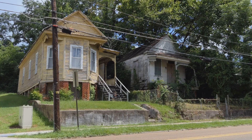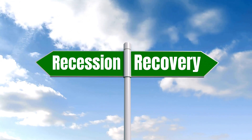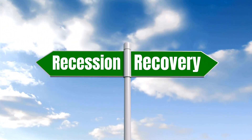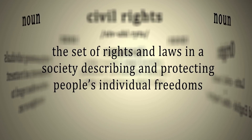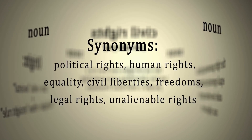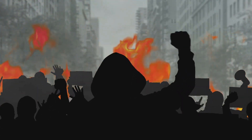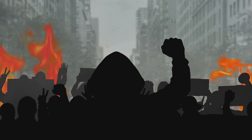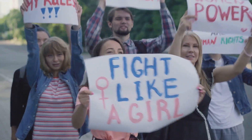Yet even as the nation stood tall on the global stage, it was grappling with internal challenges. The Great Depression of the 1930s was a stark reminder of the nation's economic vulnerabilities. However, true to its spirit of resilience and innovation, America bounced back, instituting sweeping economic reforms and social safety nets. The aftermath of the world wars and the recovery from the Great Depression marked America's rise as a global superpower. Its economic prowess, military strength, and cultural influence were felt around the world, yet the nation was also grappling with ongoing struggles for equality and justice within its borders.